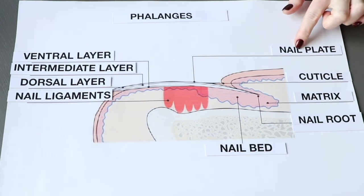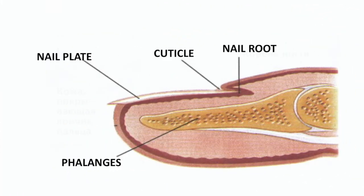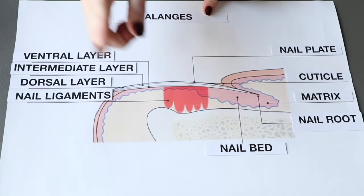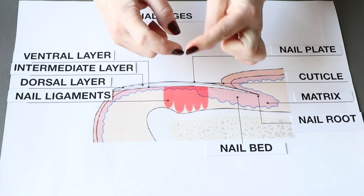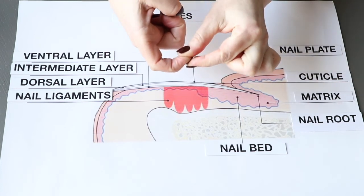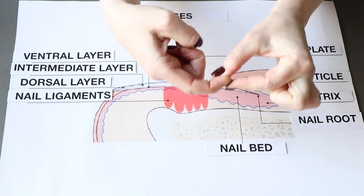Here is another diagram of a finger. You can see a bone on top of which rests the nail apparatus. This bone is called the phalanx. These are small bones forming the skeleton of a finger. A finger can bend in three places, and those segments are what we call phalanges.